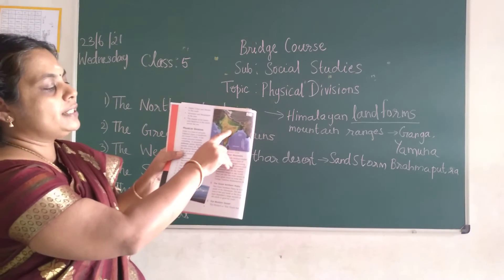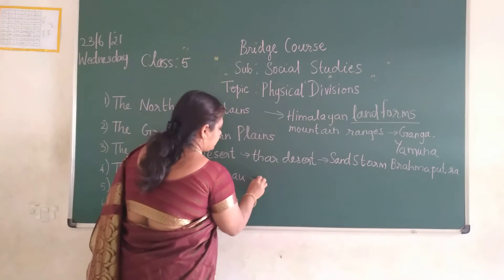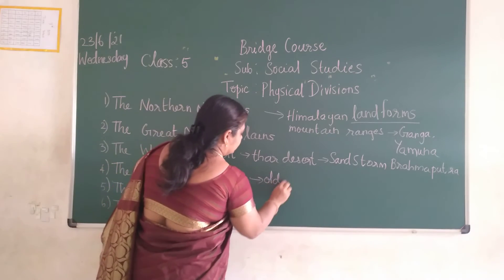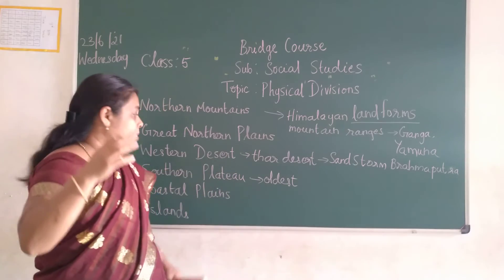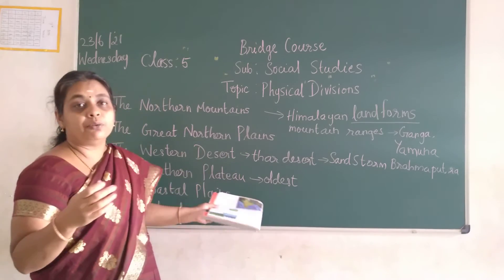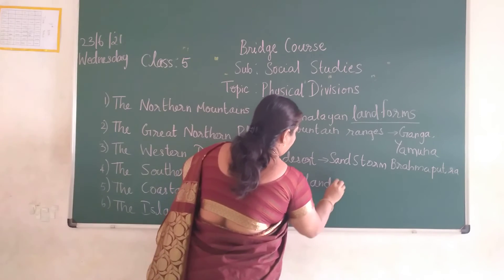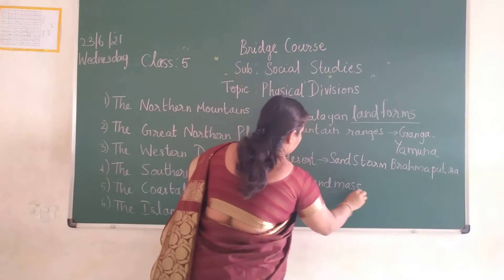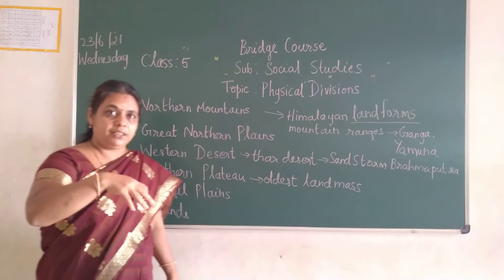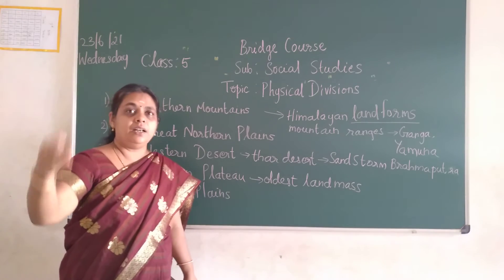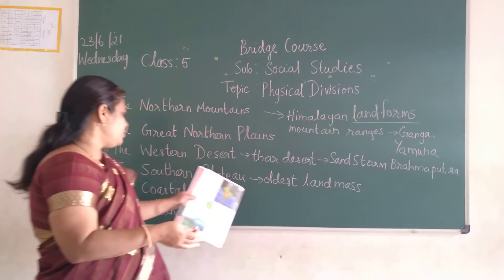The next one is the southern plateau. This is one of the oldest landforms. Before the Himalayas were formed, this southern land was already formed — that is why it is the oldest land mass. It comprises states like Madhya Pradesh and the southern states — Karnataka, Andhra Pradesh, Kerala, and Tamil Nadu.